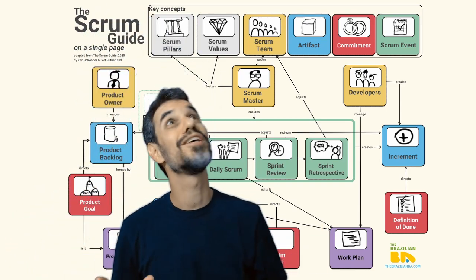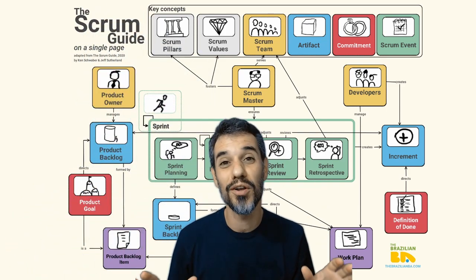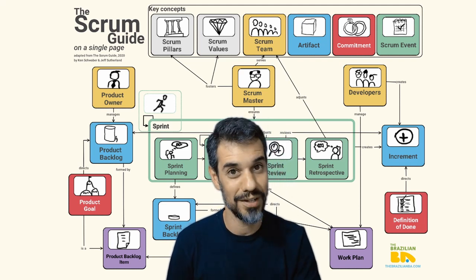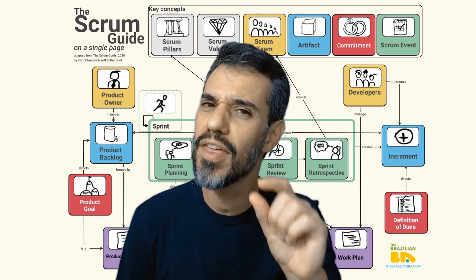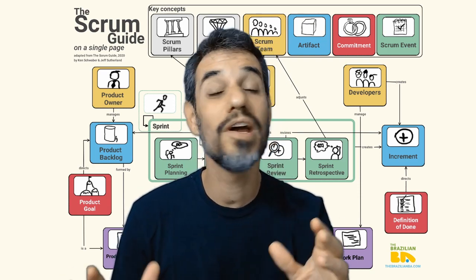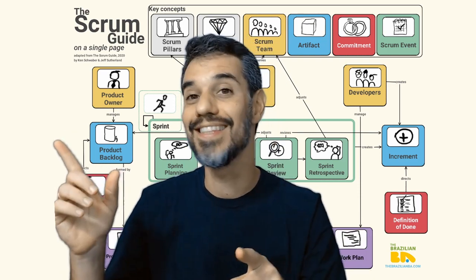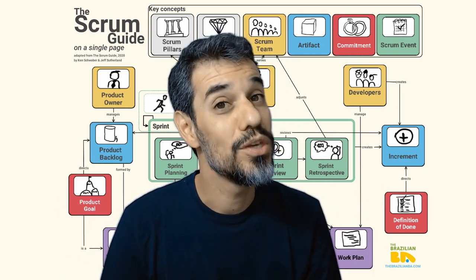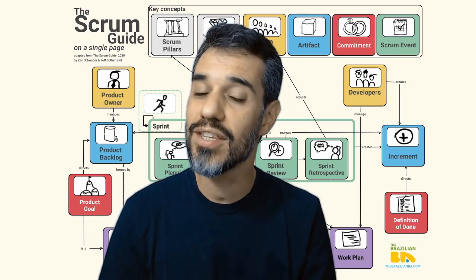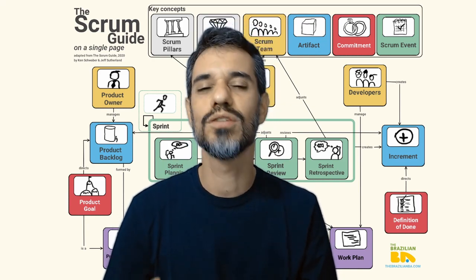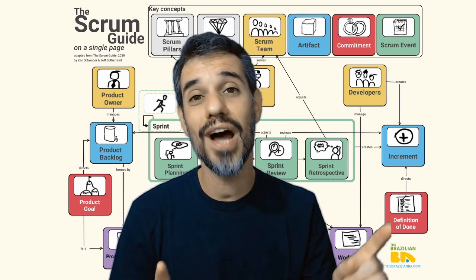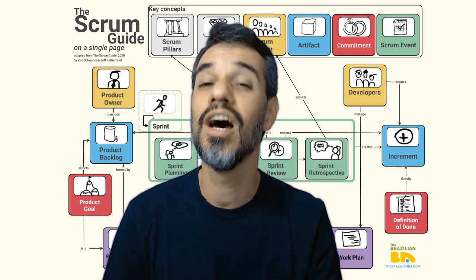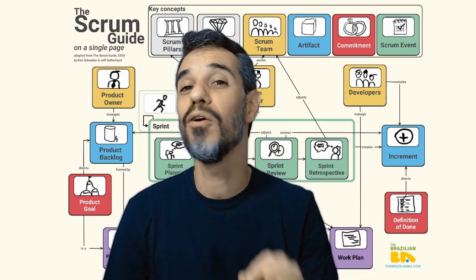Well, I believe I presented you all the concept model of the Scrum Guide. I recommend that you read the Scrum Guide. It's easy to understand, very thin book, but the model may help you to find the key concepts and study it easier. Or it may be useful for you to use with your team to present Scrum and to discuss who is doing what, where are your artifacts, if you are really using correctly all the concepts on this picture.